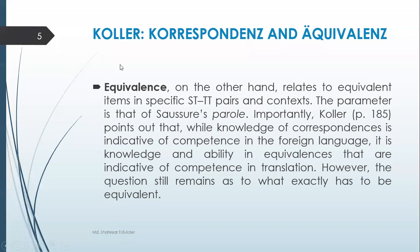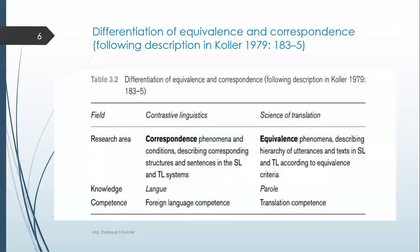Here is the chart showing the differentiation of equivalence and correspondence. In 1979, Köhler suggested this in his book. You can see the field, research area, and knowledge confidence in contrastive linguistics for correspondence phenomena, describing corresponding structures and sentences in the source language and target language systems. For equivalence, it is the science of translation — contrastive linguistics leads to correspondence, while equivalence falls under the science of translation.